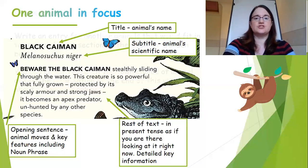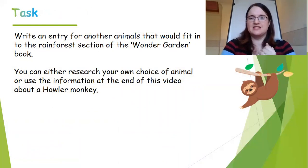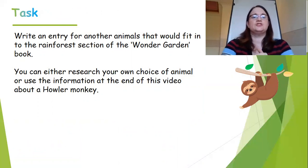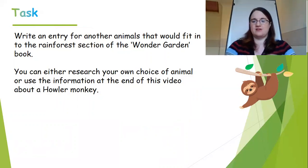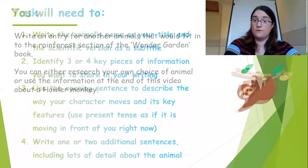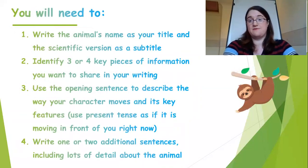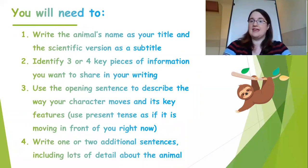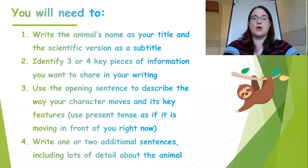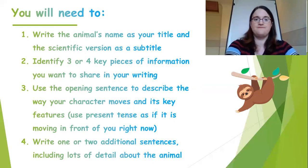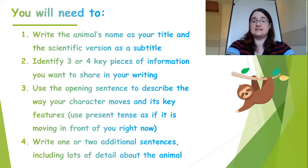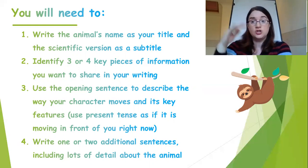Let's clarify exactly what your task is. You're going to write an entry for another animal that would fit into the rainforest section of the Wonder Garden. You can either research your own animal, or you can pick the one I've left information about at the end of the video — the Howler Monkey. You'll need a title and subtitle, an opening sentence describing the animal moving with an expanded noun phrase, and then one or two additional sentences. This is a brief piece of writing, so I want you to really think about your choice of words rather than writing loads and loads.